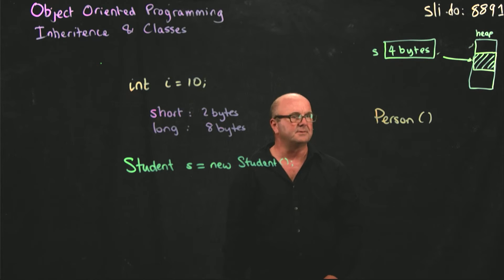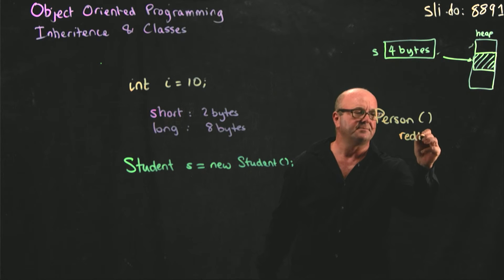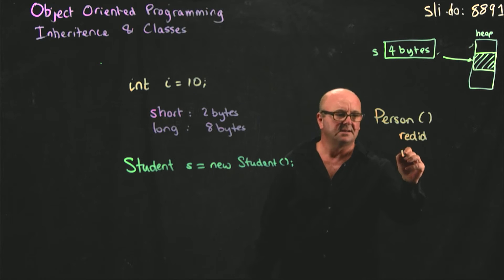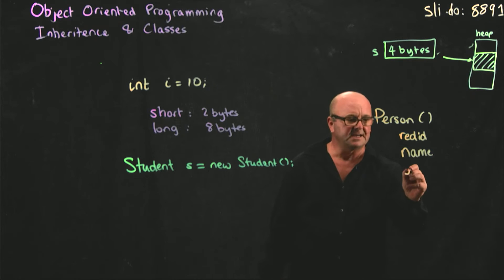It makes much more sense that I have a person class that has red ID. It makes more sense that my person class has a name. Everybody at SDSU has a name. Everybody has an email.